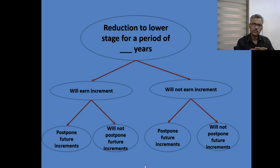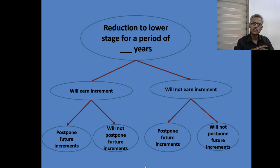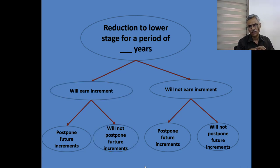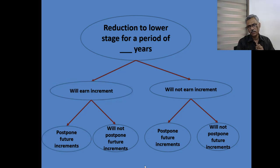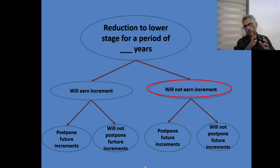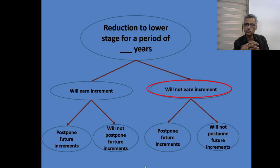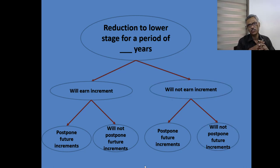Variation one: reduction by one stage for a period of two years during which he will earn increment, but it will not postpone future increments of pay. Variation two: he will earn increments during two years, but it will postpone future increments of pay. Variation three: reduction for a period of two years during which he will not earn increment, but it will postpone future increments of pay. Variation four: during this two-year period he will not earn increment, but it will not postpone future increments of pay.